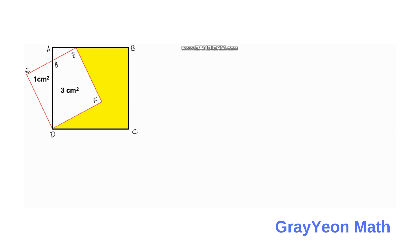First, we calculate EF. Since EFGD is a square, EF squared equals 3 plus 1, so EF equals the square root of 4, which means EF equals 2 centimeters. Since it is a square, EF equals DF equals DG equals GE equals 2 centimeters.